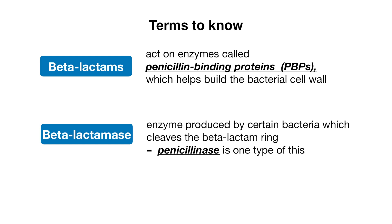Our beta-lactam antibiotics work by acting on enzymes called penicillin-binding proteins, which help bacteria build their cell wall. When we use the term beta-lactamase, we're referring to an enzyme produced by certain bacteria to cleave the beta-lactam ring, rendering the antibiotic ineffective. Penicillinase is one type of beta-lactamase, referring to an enzyme that inactivates penicillin specifically. Penicillinase is produced by most strains of Staphylococcus, including Staph aureus, so keep this in mind because it does affect coverage.